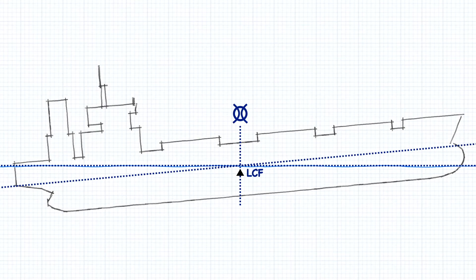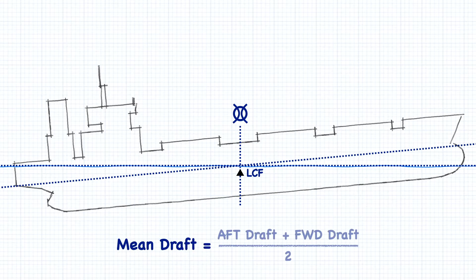On your ship, when the center of flotation is at midships, the mean draft is simply the average between the forward and aft drafts, which can be read at the midship draft marks.